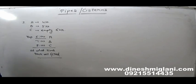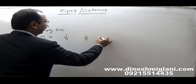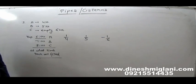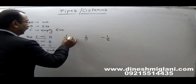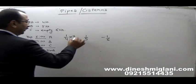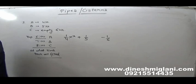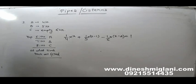Total capacity is 1. A's 1-hour work is 1/4, B's is 1/5, C's is −1/6. Let total time taken be X hours. A has worked X hours, so A filled X/4. B was opened 1 hour later, so B filled (X−1)/5. C was opened 2 hours later, so C emptied (X−2)/6. Total equals 1. Now take LCM of 4, 5 and 6, which is 60.